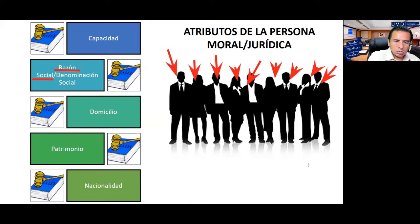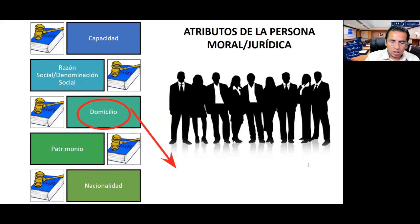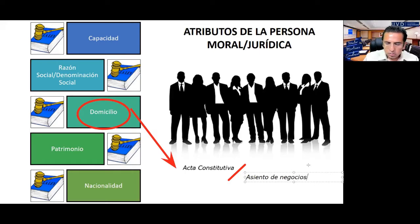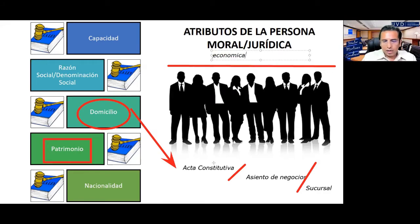La denominación es un nombre impropio, como por ejemplo FEMSA de México, Sociedad Anónima de Capital Variable. El domicilio es el que hubiesen establecido dentro del acta constitutiva; podrá ser su principal lugar de negocios o inclusive una sucursal. El patrimonio es lo susceptible de valoración económica: el activo son los bienes y el pasivo son las deudas.